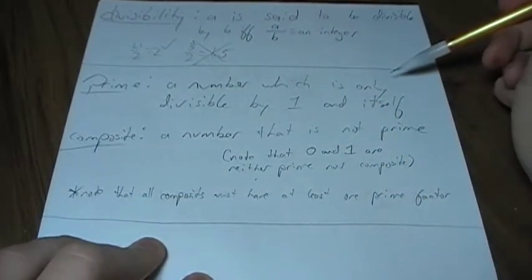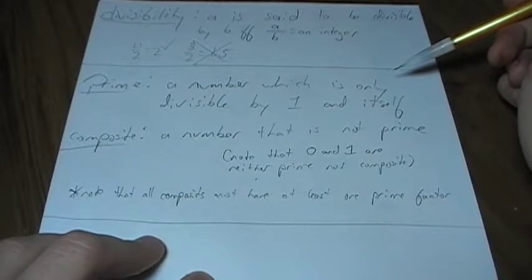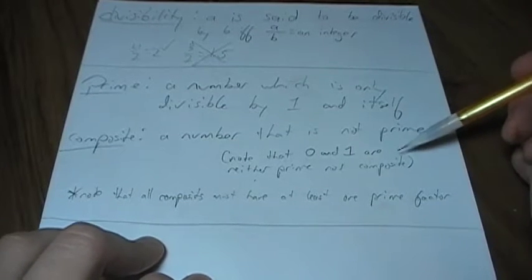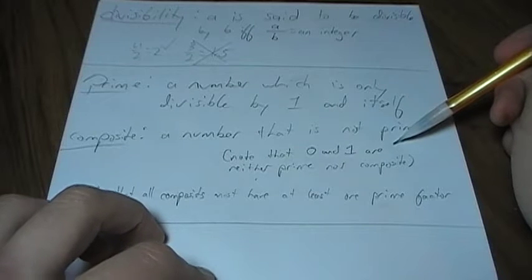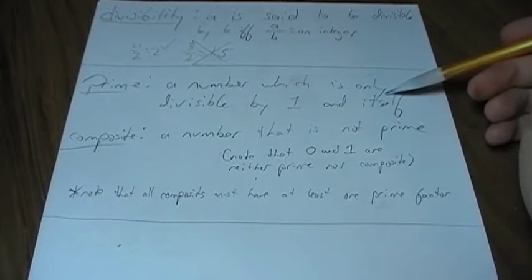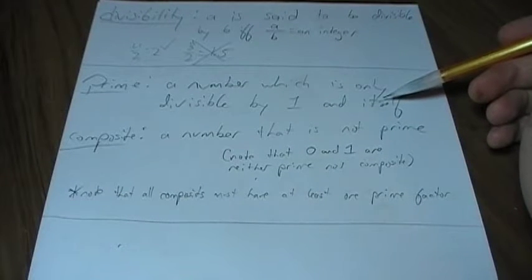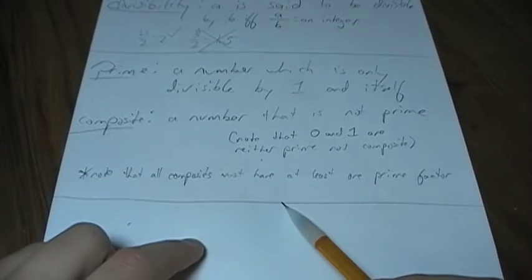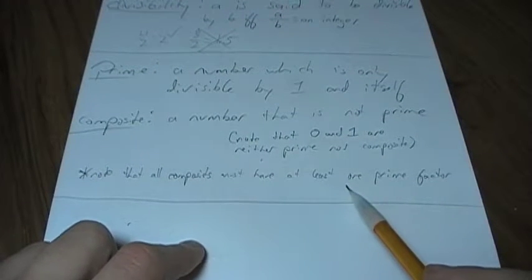Okay, a prime is a number which is only divisible by one and itself. A composite is a number that's not prime. Since it's not prime, it must have a factor other than one and itself, which means that all composites must have at least one prime factor.